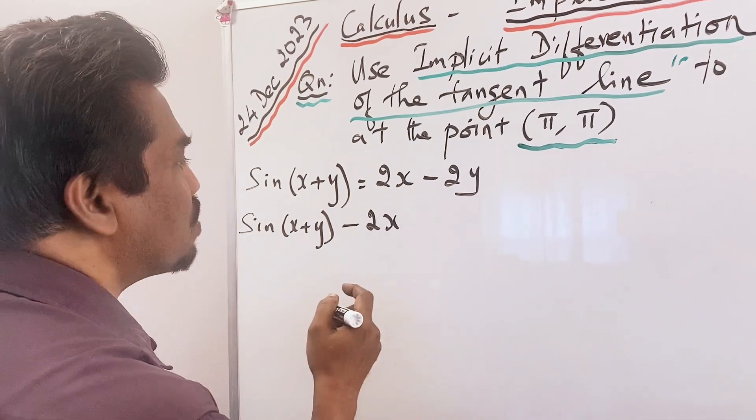Now dx/dx is nothing other than 1, so I can replace dx/dx by 1. Removing the bracket: cos(x + y)·1 gives cos(x + y), and cos(x + y)·dy/dx. So we have cos(x + y) + cos(x + y)·dy/dx − 2 + 2·dy/dx = 0.